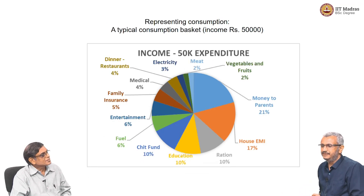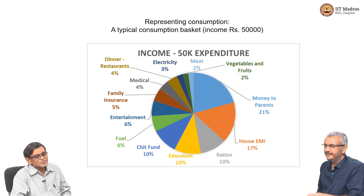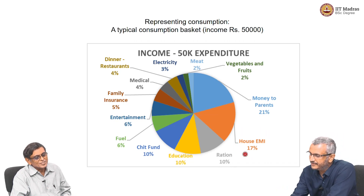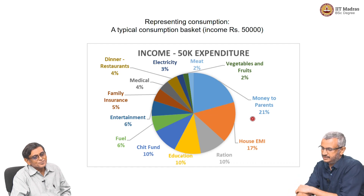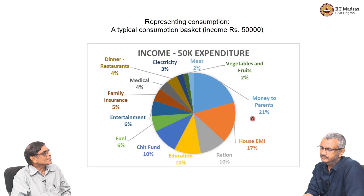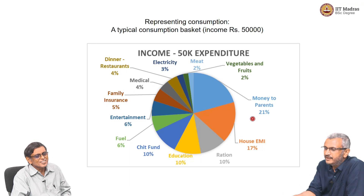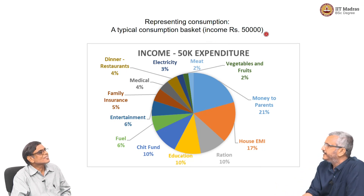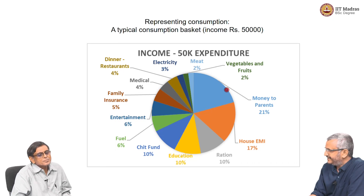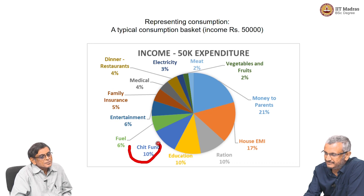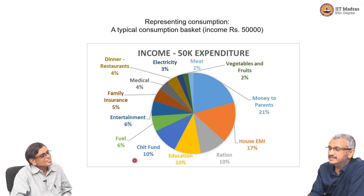Now let us look at the 50,000 rupees household. This seems to be another very interesting case. They have purchased a flat or house with a loan — 17% goes to that. There is also a commitment to family: some money is being sent to parents, a kind of dependent population. There is also something called a chit fund, which is a savings mechanism — monthly outflow where after 10 months they receive a larger amount, which they then use to consume a bigger item instead of smaller ones.